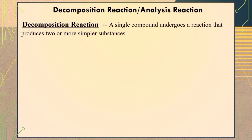The general equation for this type of reaction is AB. When heat energy is applied, it will dissociate into A plus B.